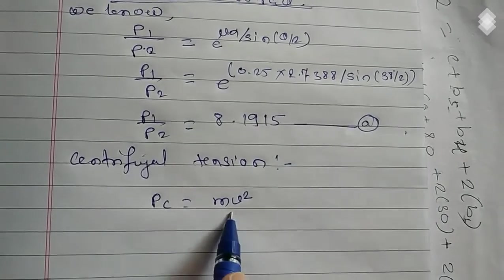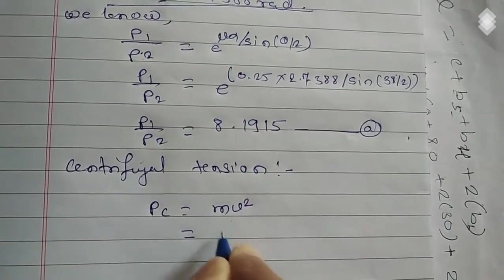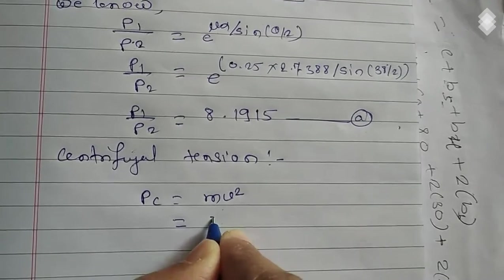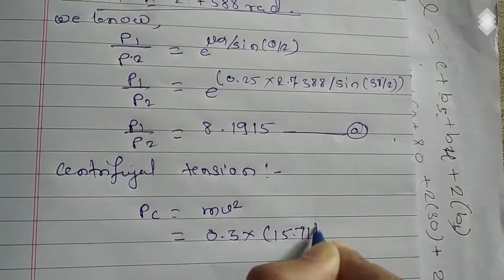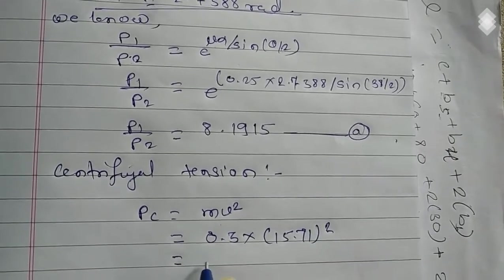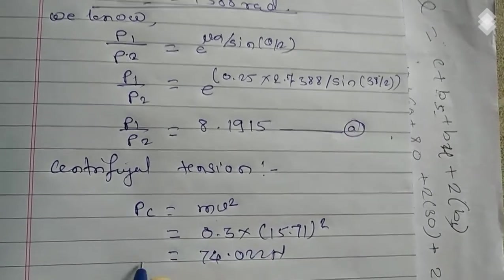Let's use the formula of centrifugal tension. So it is m v squared, m is given 0.3, we already calculated v squared. So centrifugal tension is equal to 74.02 newton.